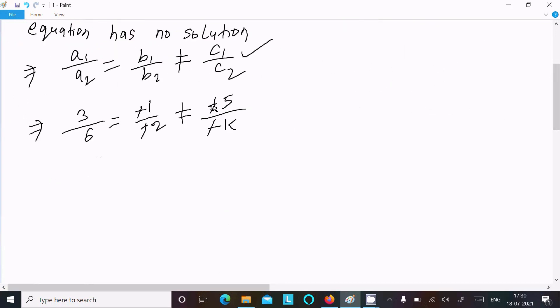So you can write 3 by 6 as 1 by 2, not equal to 5 by k. When you cancel by 2, we can write 1 by 2 equal to 1 by 2, not equal to 5 by k.